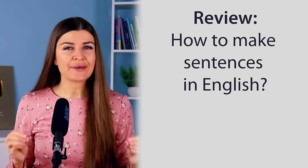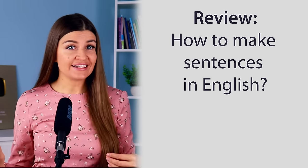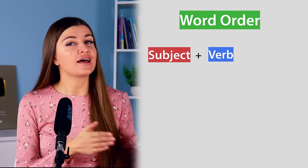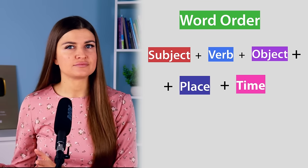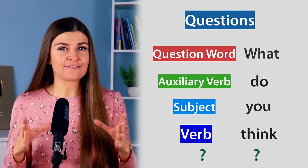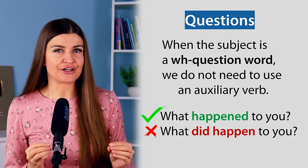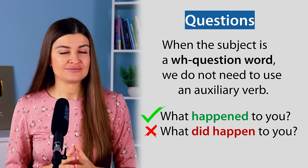Now let's review how we make sentences in English. Always remember these rules. The word order is: subject, verb, object, place, and time. When you ask a question, always put an auxiliary verb before the subject. When the subject is a WH question word, you don't need to use an auxiliary verb. Today I've told you about the important rules you need to follow to form English sentences correctly. This is the end of today's lesson. Thank you for watching. If you have any questions, feel free to ask me in the comments below. If you like my content, you can send me super thanks. Thank you for your support. See you next time!